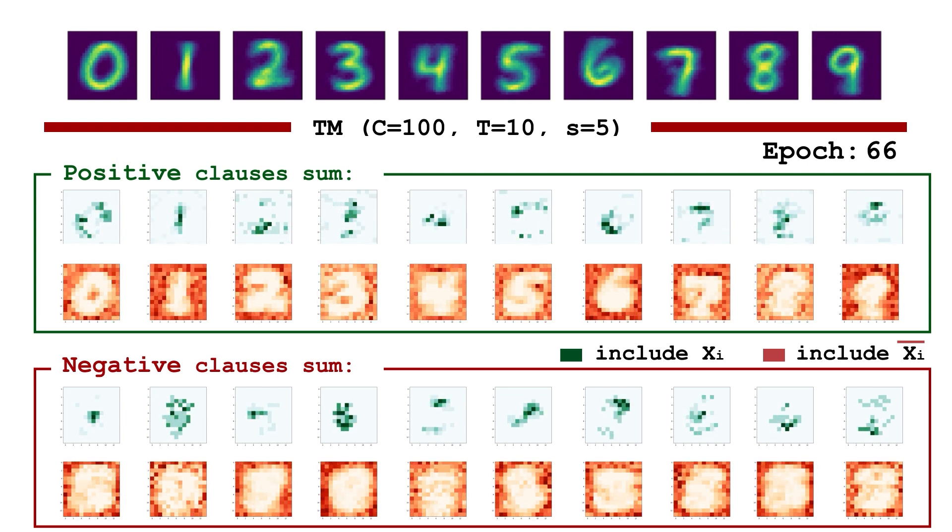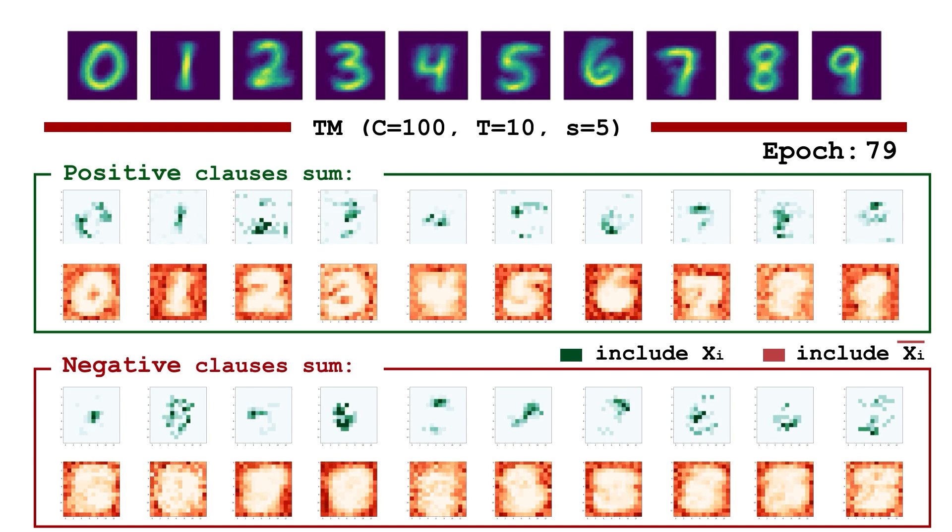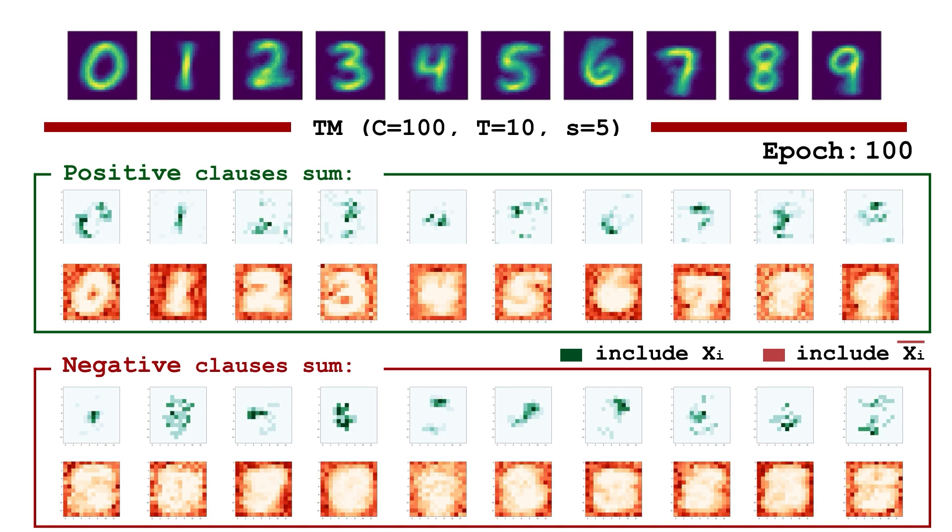During inference, both positive and negative clauses cast votes for or against assigning a data sample to a particular class. The class with the highest clause votes is chosen as the final prediction.